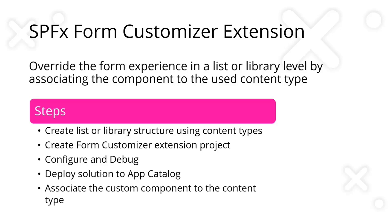To get started, there are five steps involved. First, create a basic list or library structure using content types — I recommend using content types. Then, create a customizer extension project using SPFx. Next, configure and do some debugging. Once done, deploy the solution to the app catalog. The last step is to associate your custom component with the content type of the list.